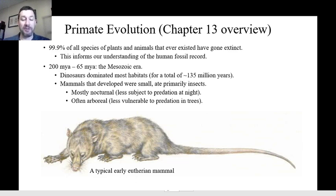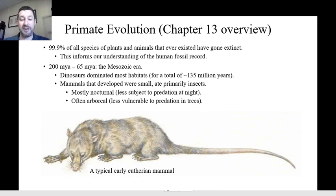Dinosaurs filled most of the ecological niches. There were dinosaurs of all different sizes, from very large to very small. There were flying dinosaurs, terrestrial dinosaurs, aquatic dinosaurs — that was the type of life that was most common.